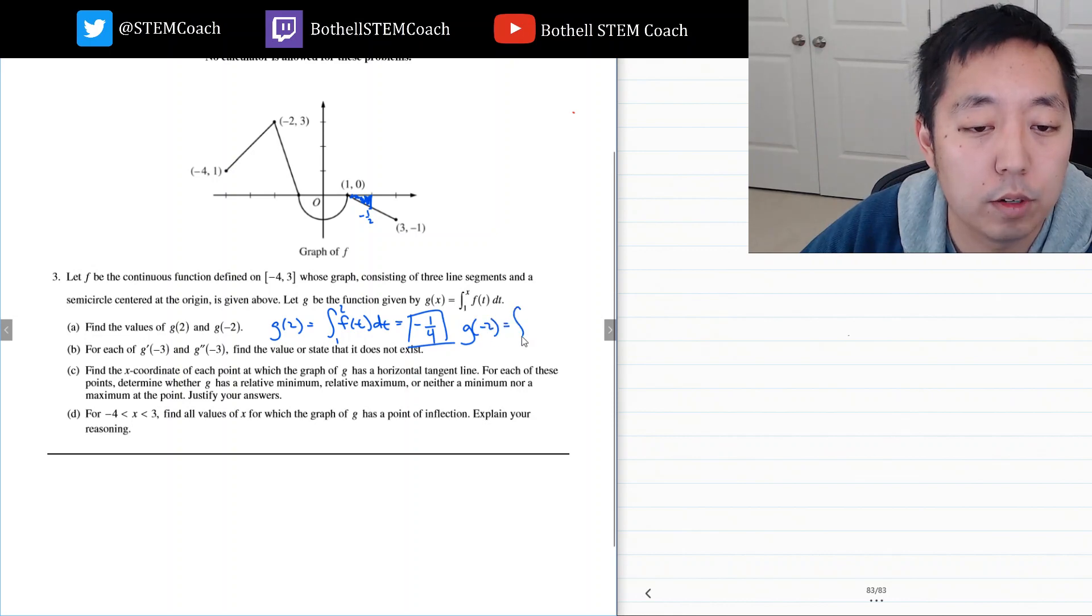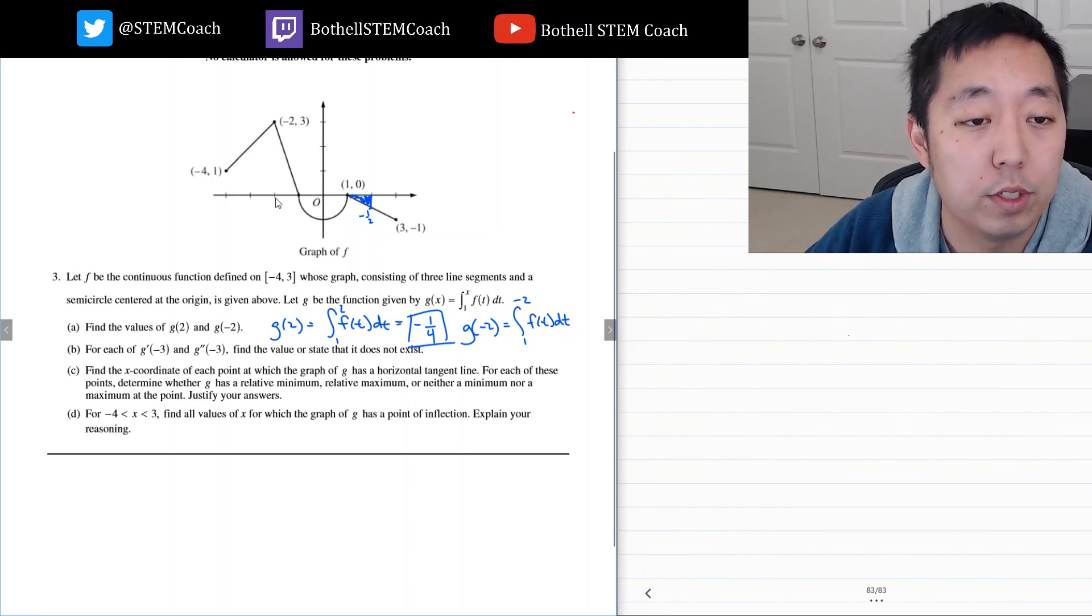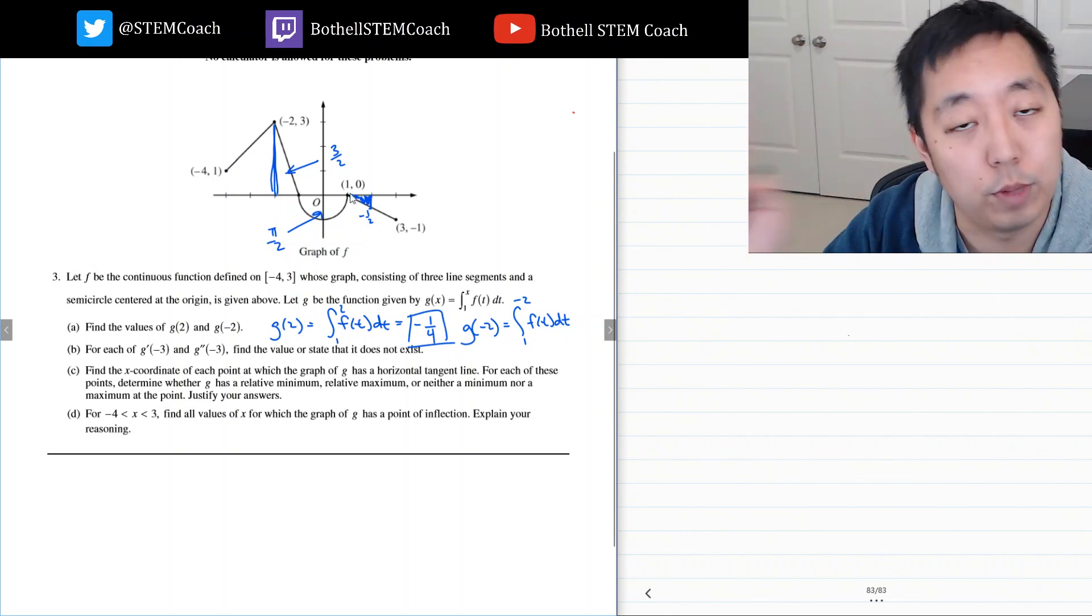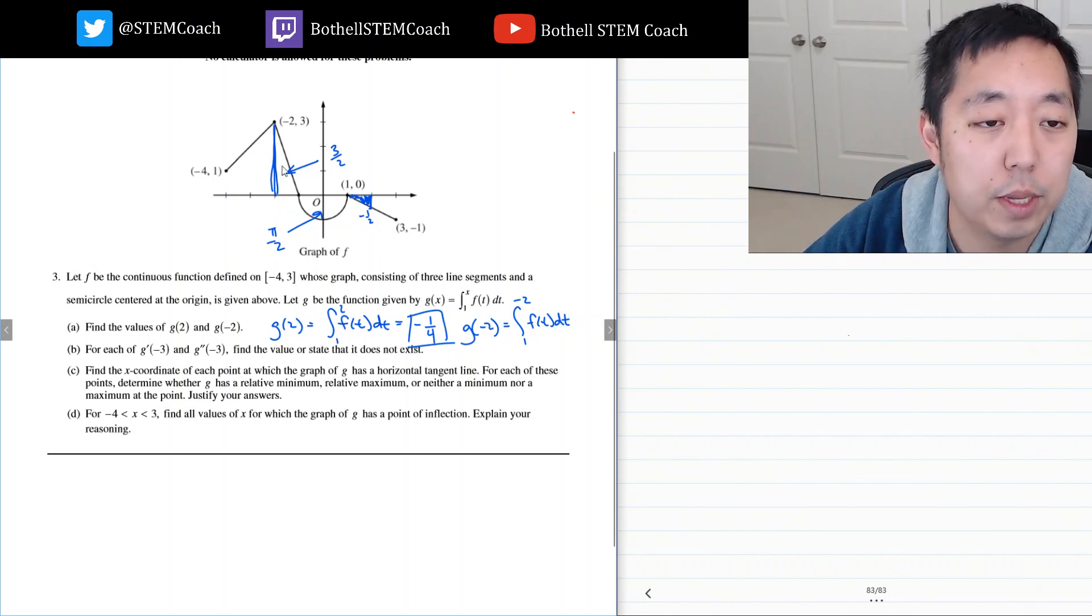Now, G of negative 2 is the integral from 1 to negative 2 of F of T DT. So, I'm doing the integral from 1 to negative 2, sort of like if you did it from negative 2 to 1 and then inverted it. So, let's just find the areas and then we'll figure out what the sign is. The area of this triangle, this is a width of 1 and a height of 3. So, this area here is 3 halves. This area here, because it's a semicircle with radius 1, a full circle would be pi r squared, which would just be pi. So, half a circle is pi over 2. Now, when we're integrating from 1 to negative 2, it flips signs because we're going from right to left instead of left to right. So, this ends up being positive area and this ends up being negative area. So, that equals pi over 2 minus 3 halves.